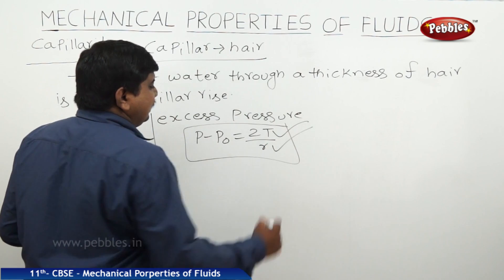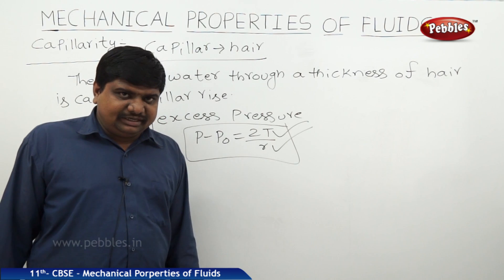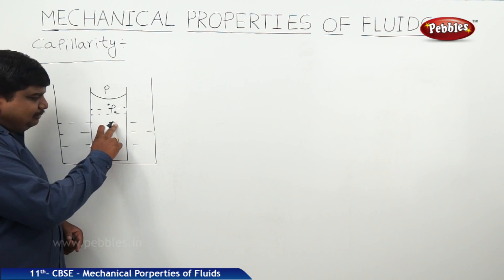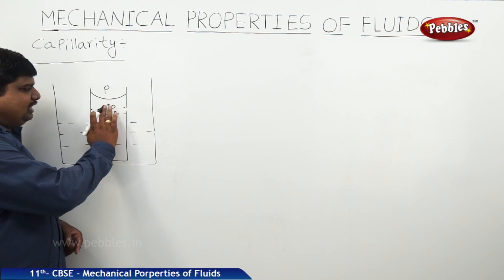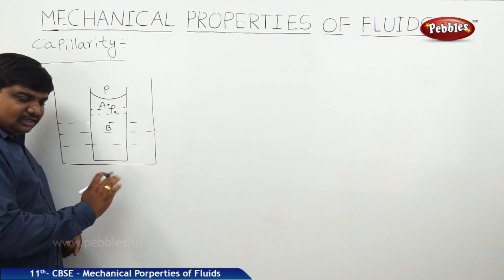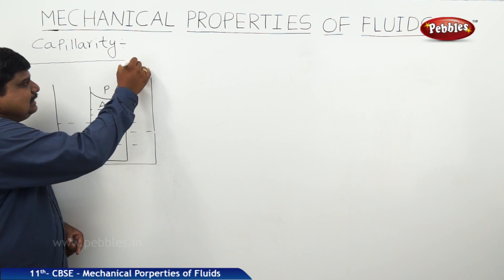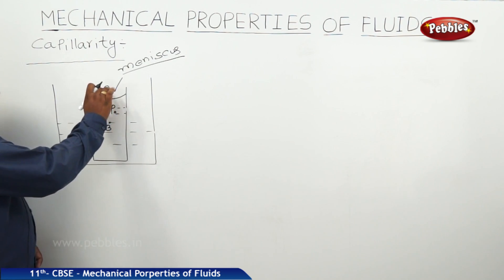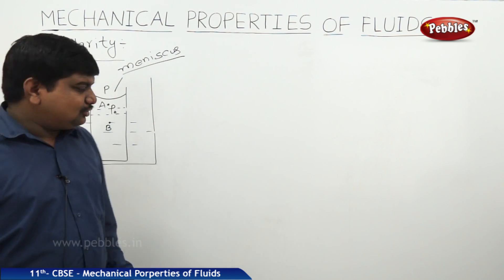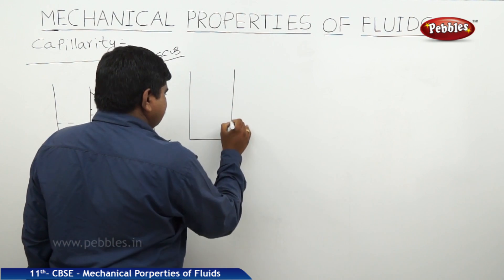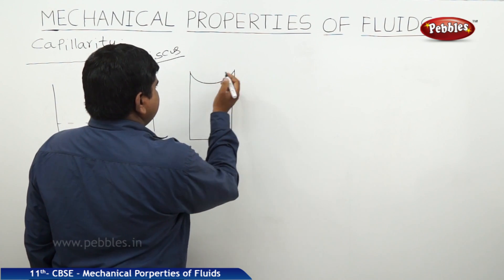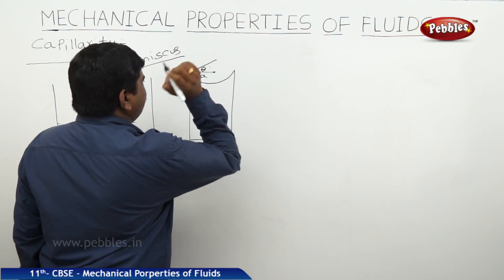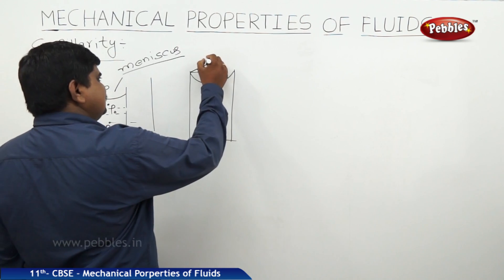We should find T and R by taking some assumptions with the help of trigonometry. This is a cylindrical tube dipped in water. Point B is the lowest point of the water level outside, and the water has risen to point A inside, where the pressure is P-naught and it occupies the shape of a meniscus.